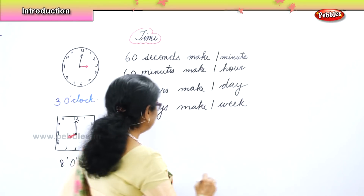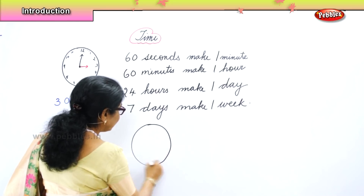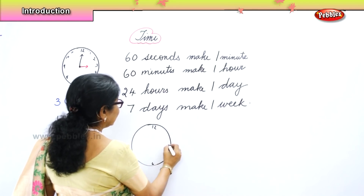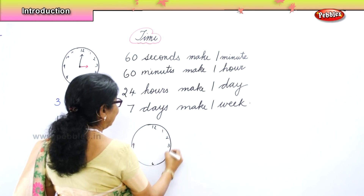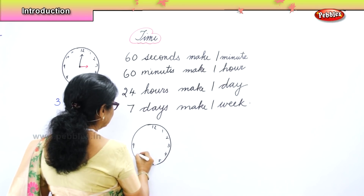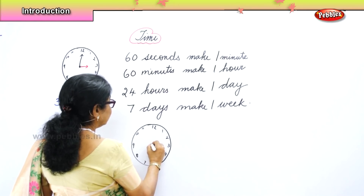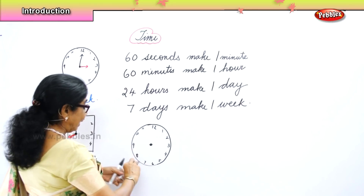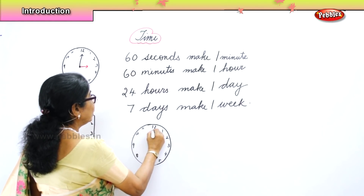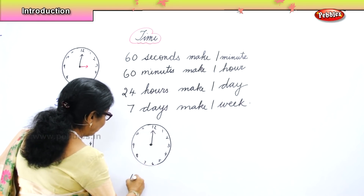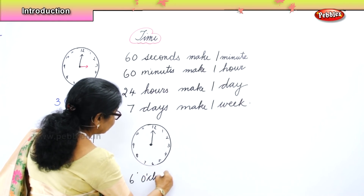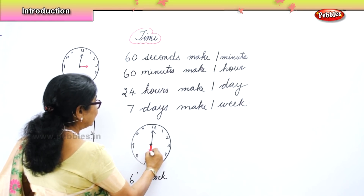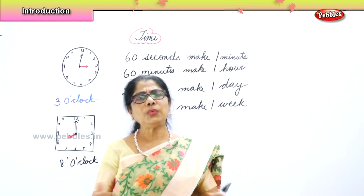At what time you get up? I get up at 6 o'clock. Let's draw that clock. You must wake up every day at 6 o'clock. The clock has two hands - first the minute hand faces the 12, then the short hour hand points to 6. That is 6 o'clock.